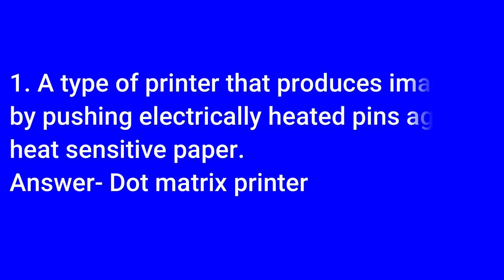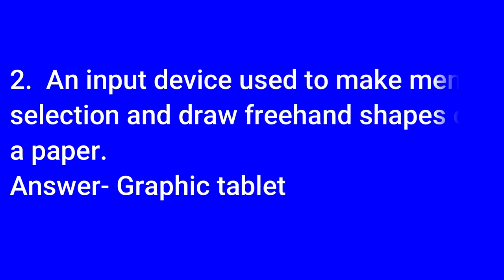Now some technical terms that students asked about. One: a type of printer that produces images by pushing electrically heated pins against heat-sensitive paper — answer: dot matrix printer. Two: an input device used to make menu selections and draw freehand shapes on paper — answer: graphic tablet.